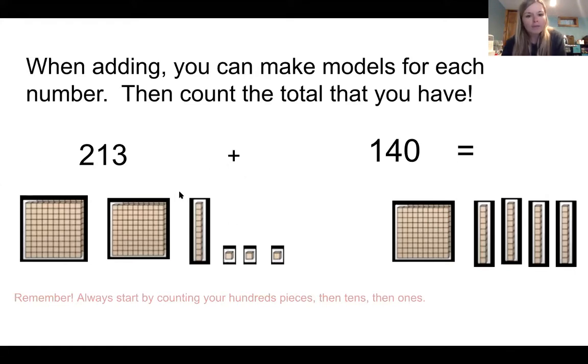Well, I've drawn my model for each number. 200s, 110, and three ones. 100, four tens, and zero ones, no ones. Remember, I always start by counting my hundreds pieces to get my total. So let's do that.